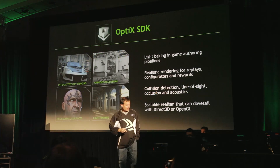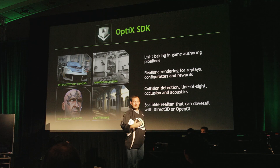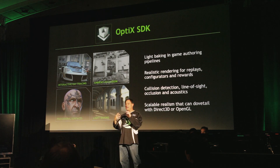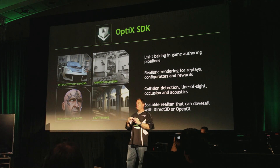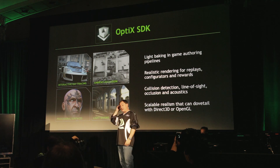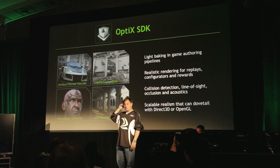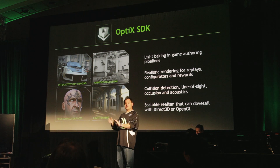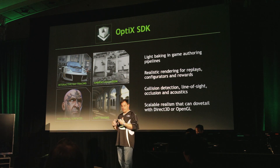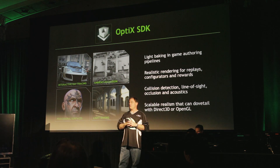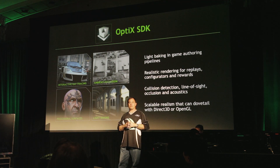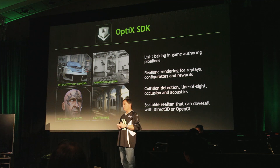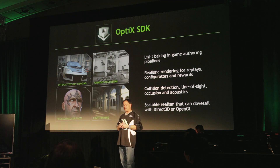Optix. Some of you may have heard of Optix before. It's an SDK for building primarily rendering engines that do ray tracing. It can be used for a wide variety of things — for building ray tracers to do ambient occlusion, to bake in light maps for games, for real-time ray tracing. The highest-performance ray tracers on the planet, in fact, are built on Optix on NVIDIA GPUs.